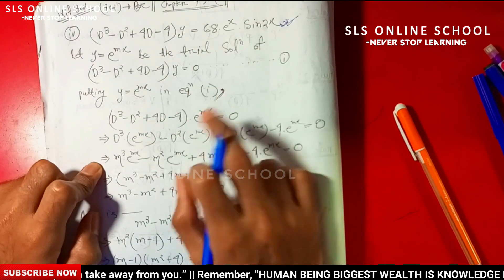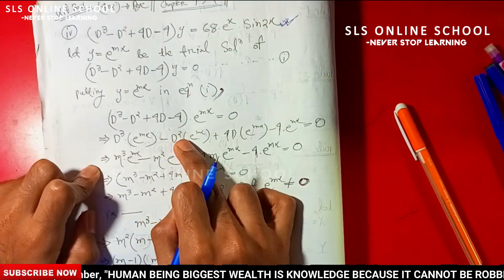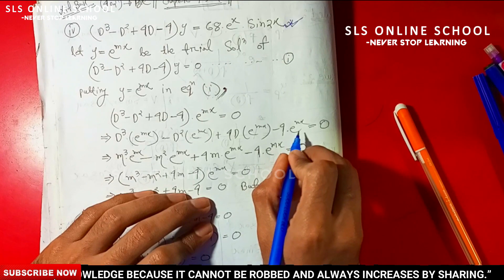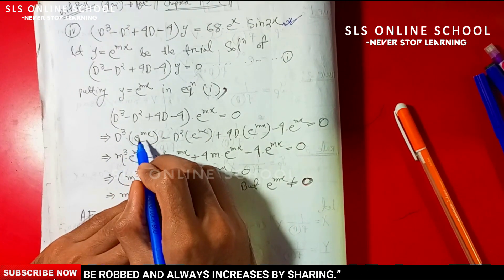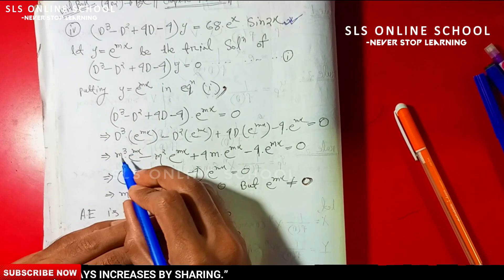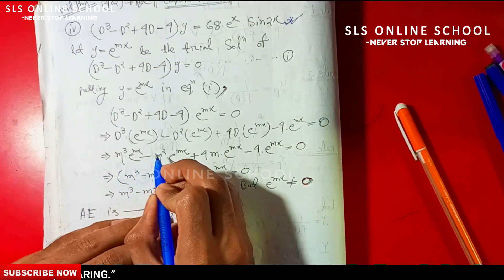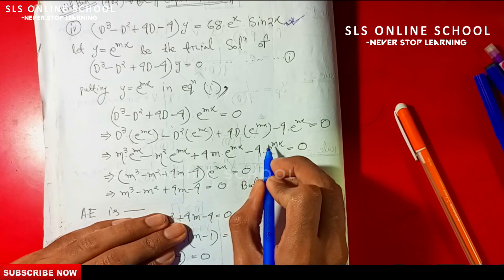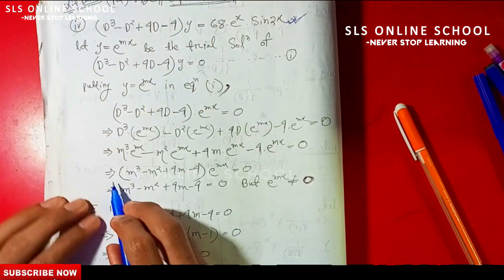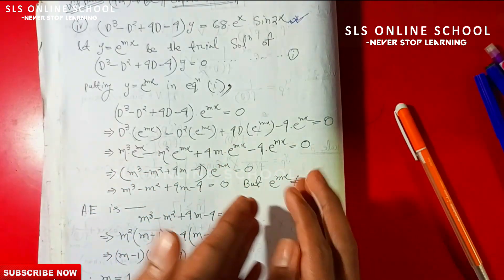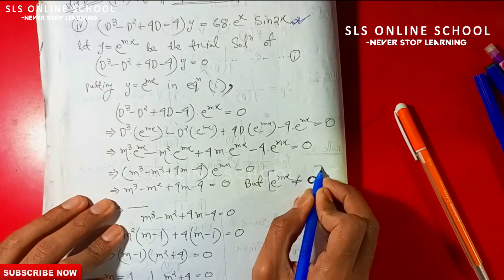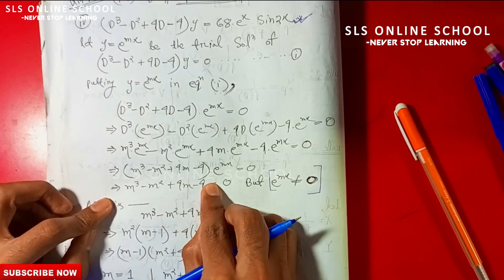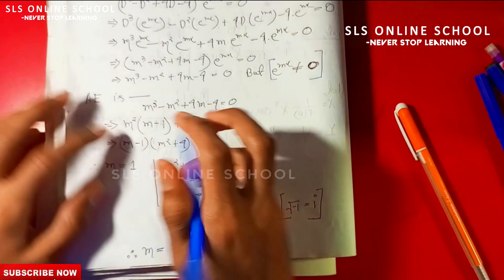Substituting y equal to e to the power mx: D-cube into e to the power mx minus e to the power mx plus 4D into e to the power mx gives zero. Since e to the power mx is not equal to zero, taking it as common, we get m-cube minus 3m-square plus 4m minus 4 equal to zero — the auxiliary equation.